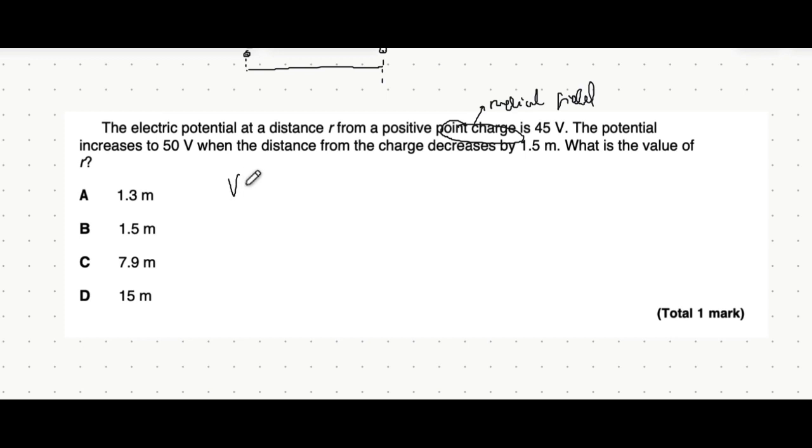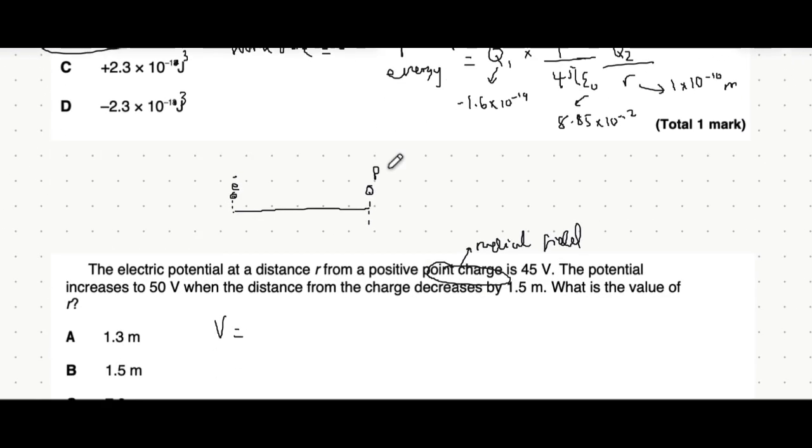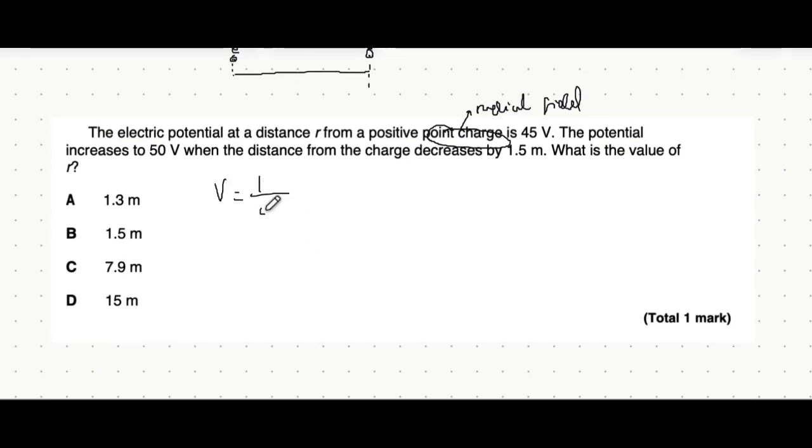So the electric potential equation for a radial field we've already introduced it, 1 over 4 pi e0 multiplied by q over r. It says that at a distance r the potential is 45 volts whereas when the distance decreases by 1.5 meters, r minus 1.5 will have a potential of 50 volts. What is the value of r?